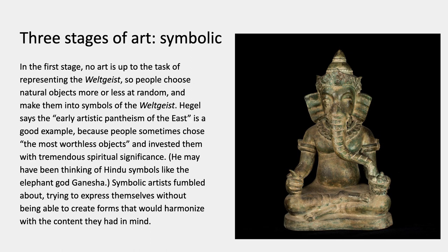Hegel has a famous proposition about three stages of art — not just visual arts, but all art — as they progress in accord with the world spirit. The first of these stages is symbolic. In that stage, no art is up to the task of really representing the Weltgeist. So people choose natural objects more or less at random and make them into symbols. Hegel says the early artistic pantheism of the East is a good example, because people sometimes choose the most worthless objects and invest them with tremendous spiritual significance — he may have been thinking of Hindu symbols like the elephant god Ganesha. Symbolic artists, Hegel says, fumbled around trying to express themselves without being able to create forms that would harmonize with the content they had in mind.